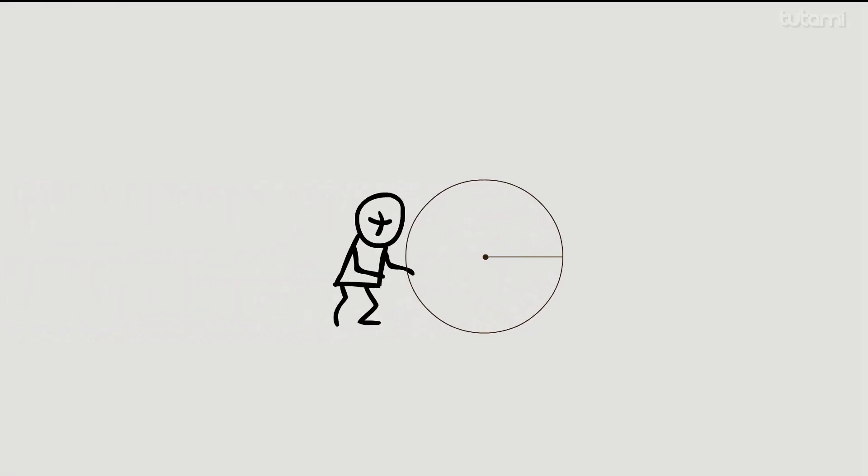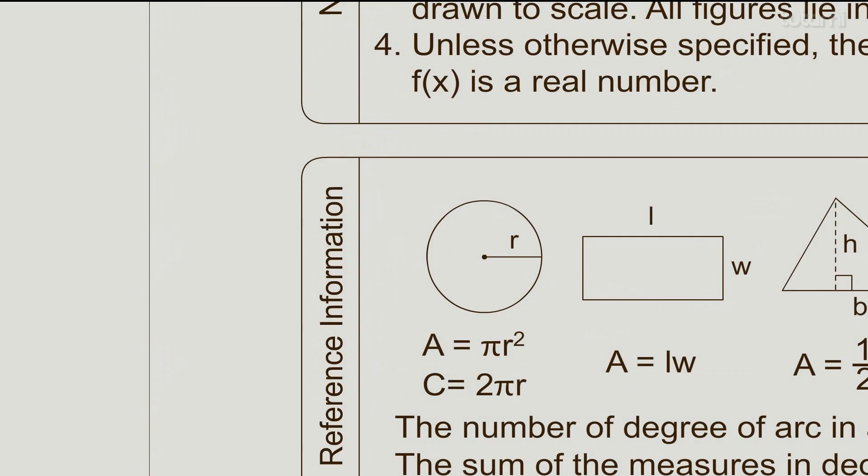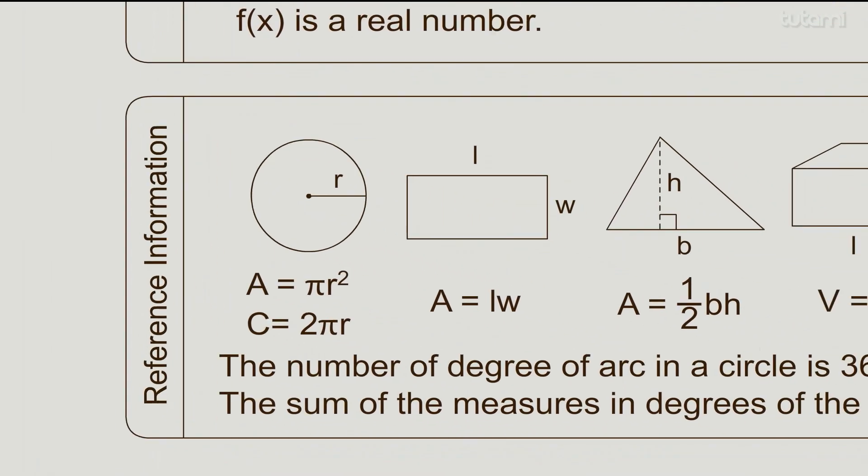A circle is a closed geometric figure where the center is the same distance from each point on the ends. These formulas are found at the beginning of each SAT math section in case you forget.